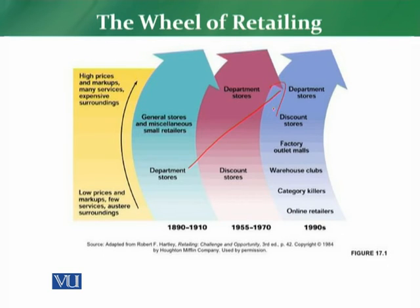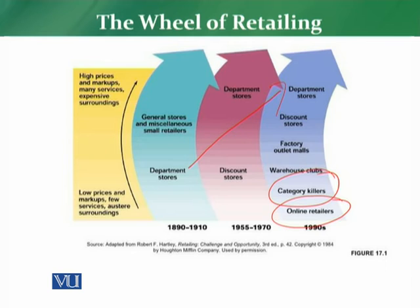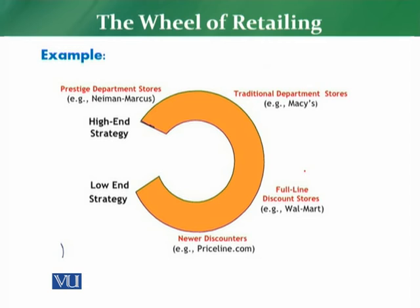Department stores started at entry level and moved to the premium position. Today, the online retailer occupies the entry level phase. Online retailers and category killers offer low prices, and customers shop there primarily because of price. Examples of entry-level online discounters include Priceline.com and discount platforms like AlaOffer.pk, which offer online discounting and product deals.